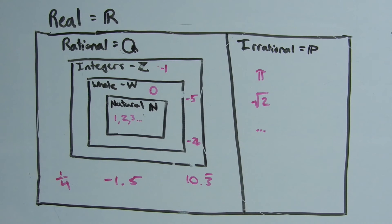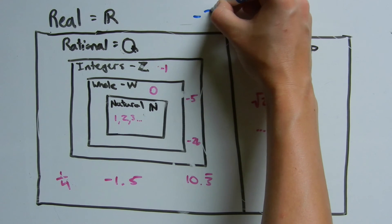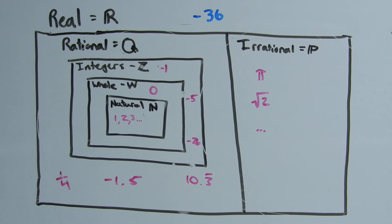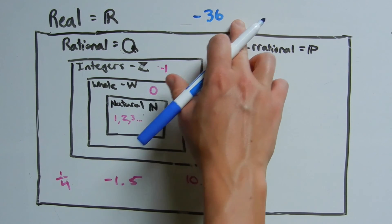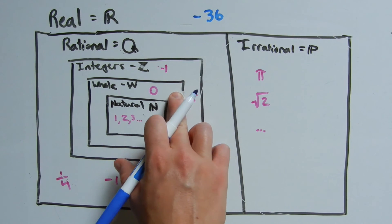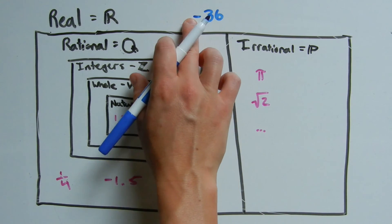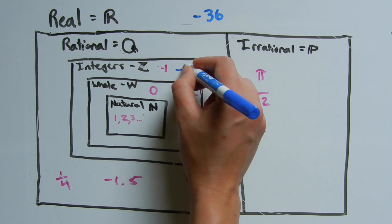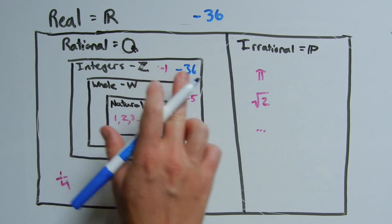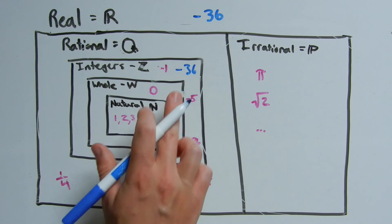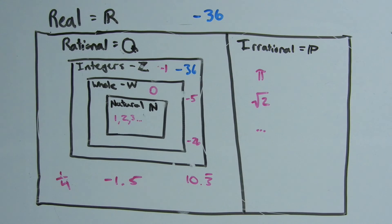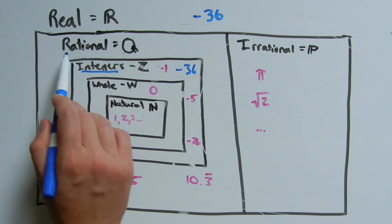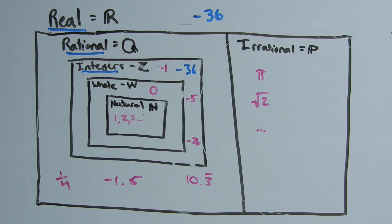For example, if I asked you to classify negative 36 — we know it's rational and we know it's an integer, but it's not a whole number because it's negative. So negative 36 would be grouped within the integer box but not inside the whole number or natural number box, while still being within rationals and reals. Negative 36 is not only an integer — it's also rational and it's a real number. We'll look at more examples in later videos.